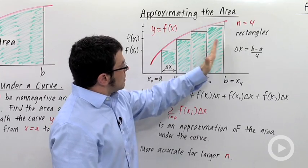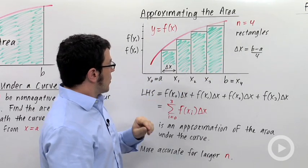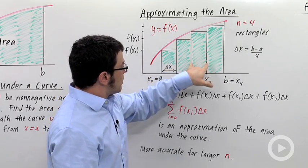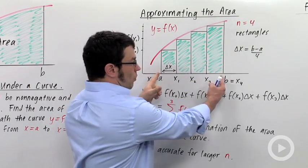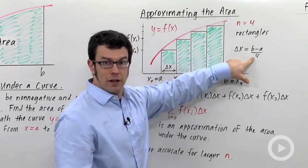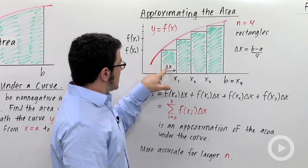We use four rectangles to approximate the area under this curve. Each rectangle is the same width, and that width, Δx, is b minus a, the total width of the interval, divided by four, the number of rectangles. So that's what Δx is.